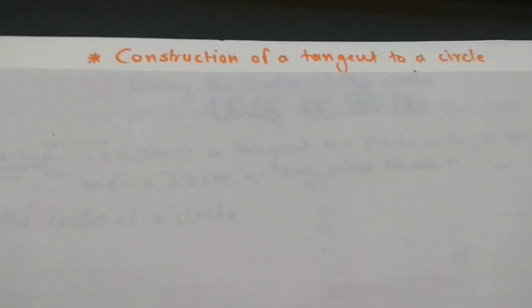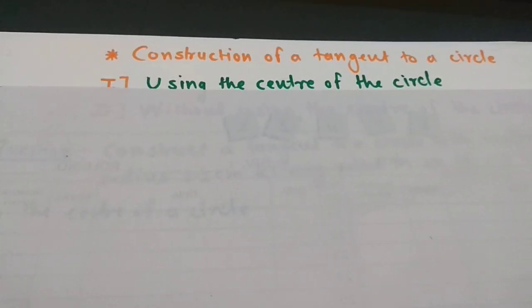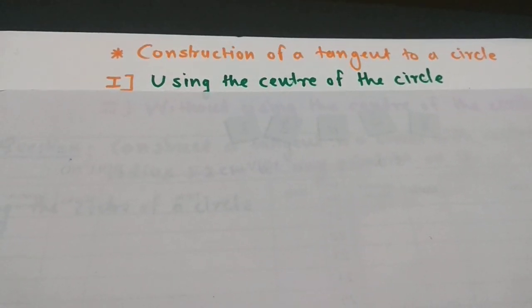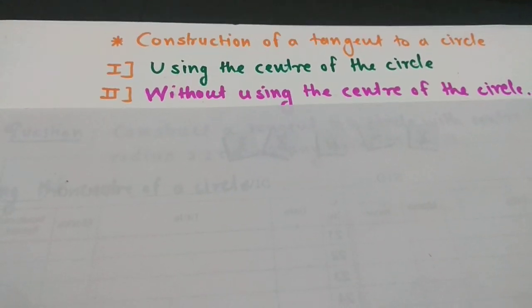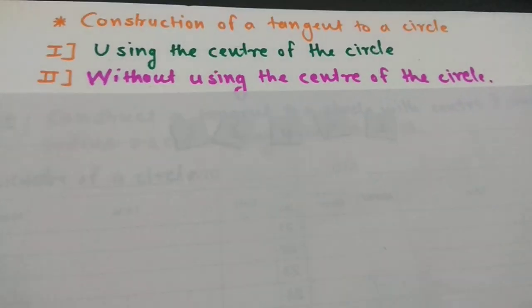Hello friend, today we are going to learn how to draw tangent to the circle. There are two types to draw tangent to the circle. First one is using center of the circle, the second one is without using center of the circle.